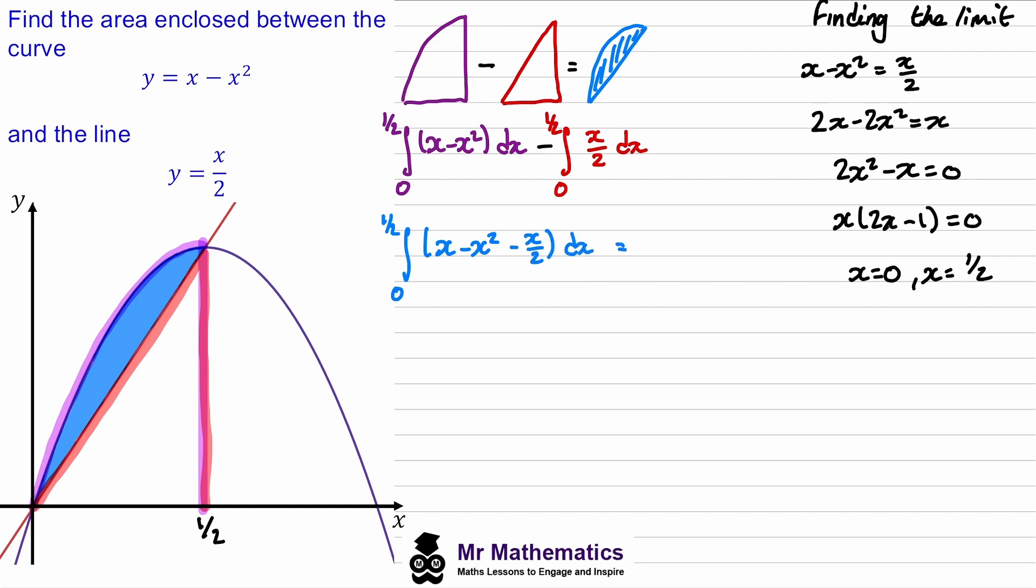We can simplify this by collecting this x with the negative half x. So we get the integral of x over 2 minus x squared dx. Then all we need to do is evaluate this integral.